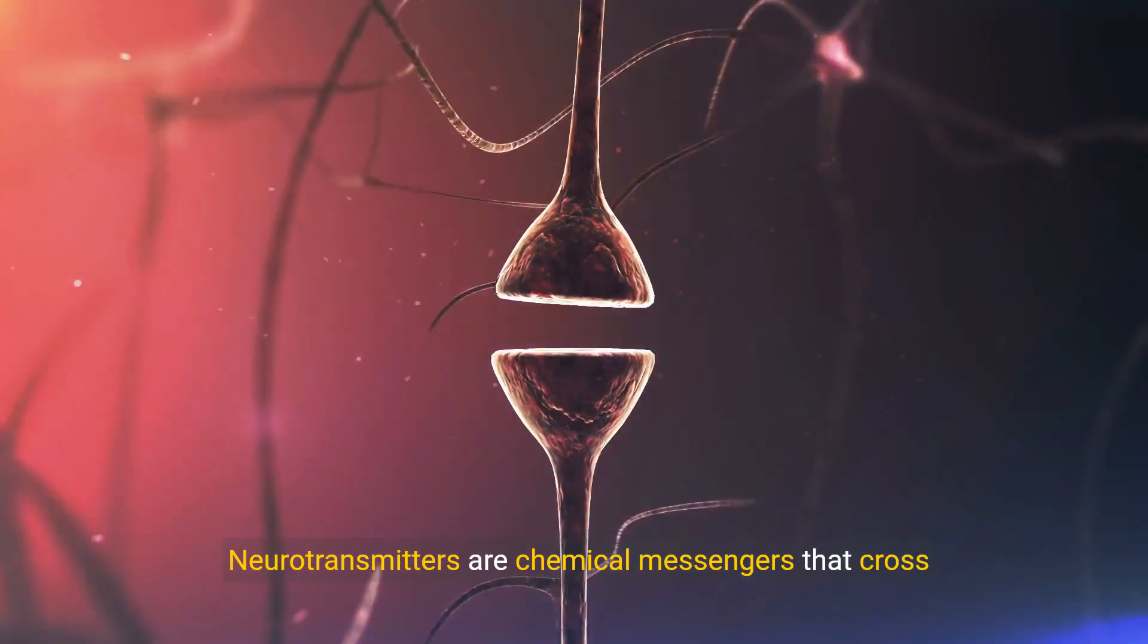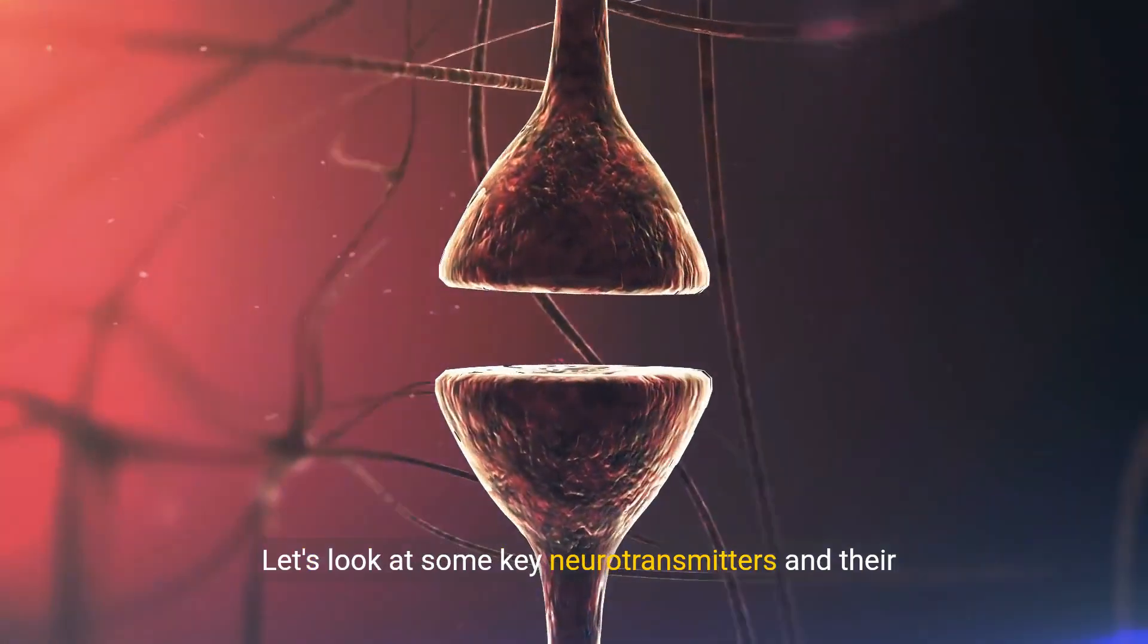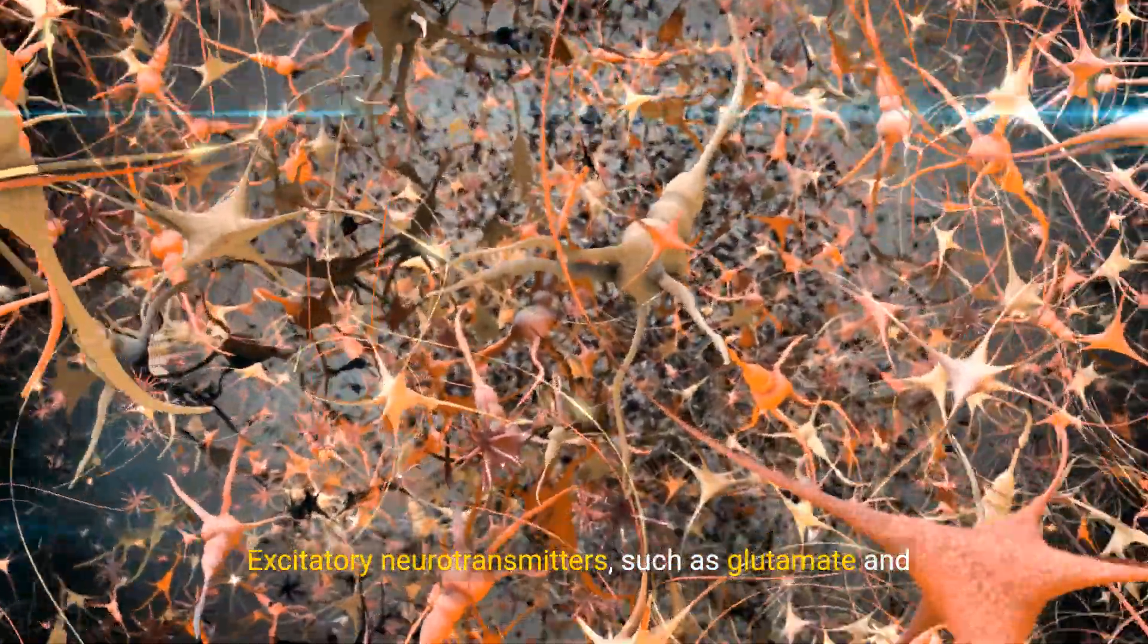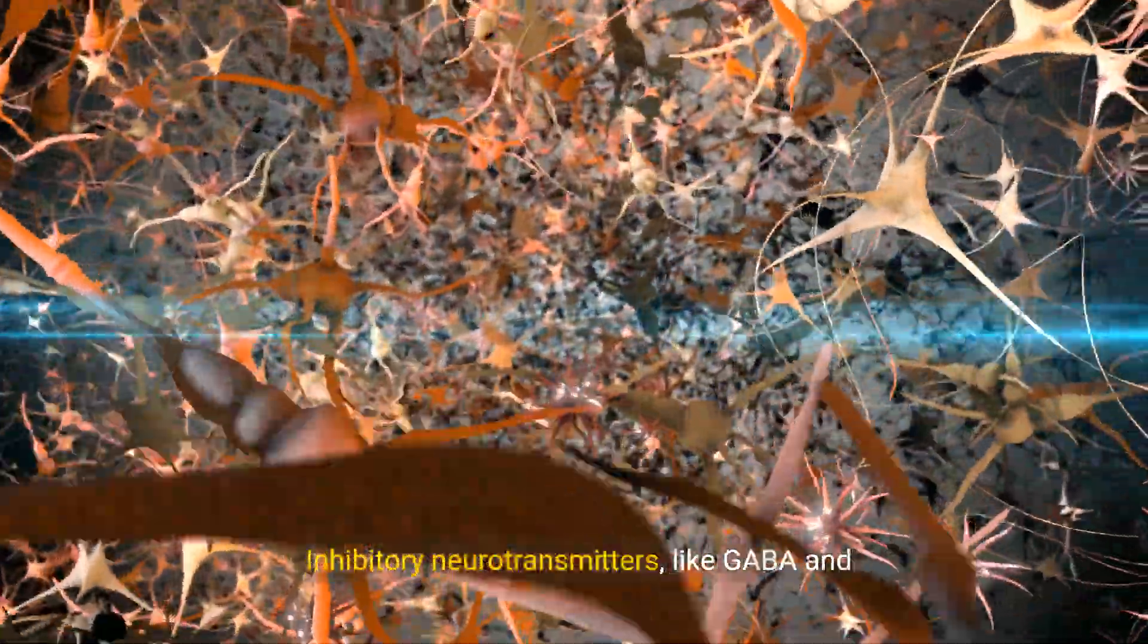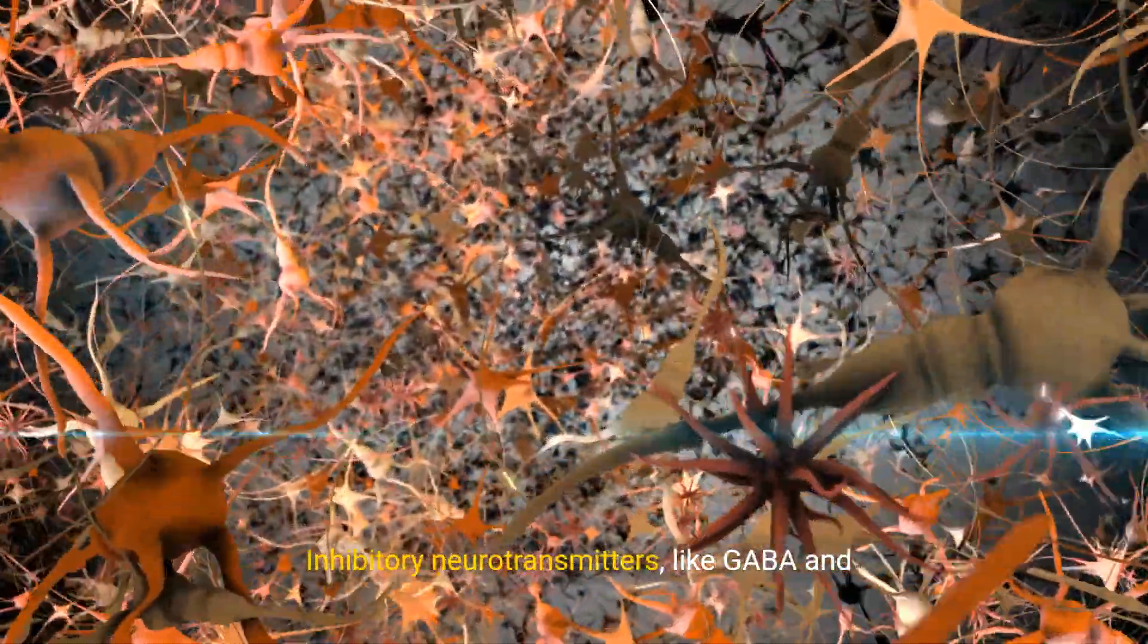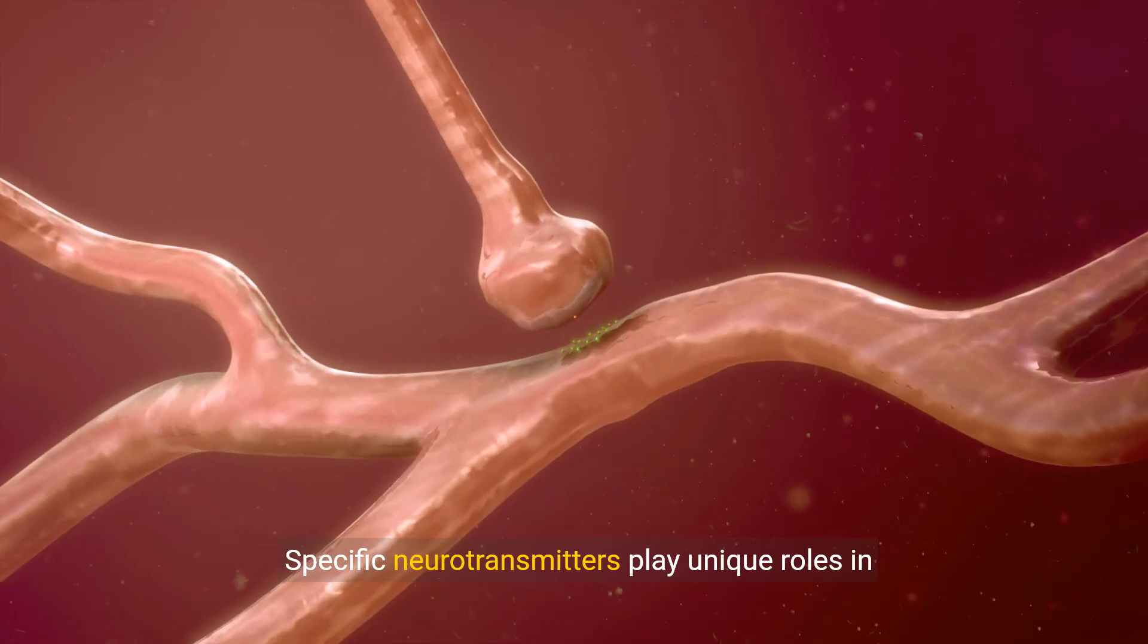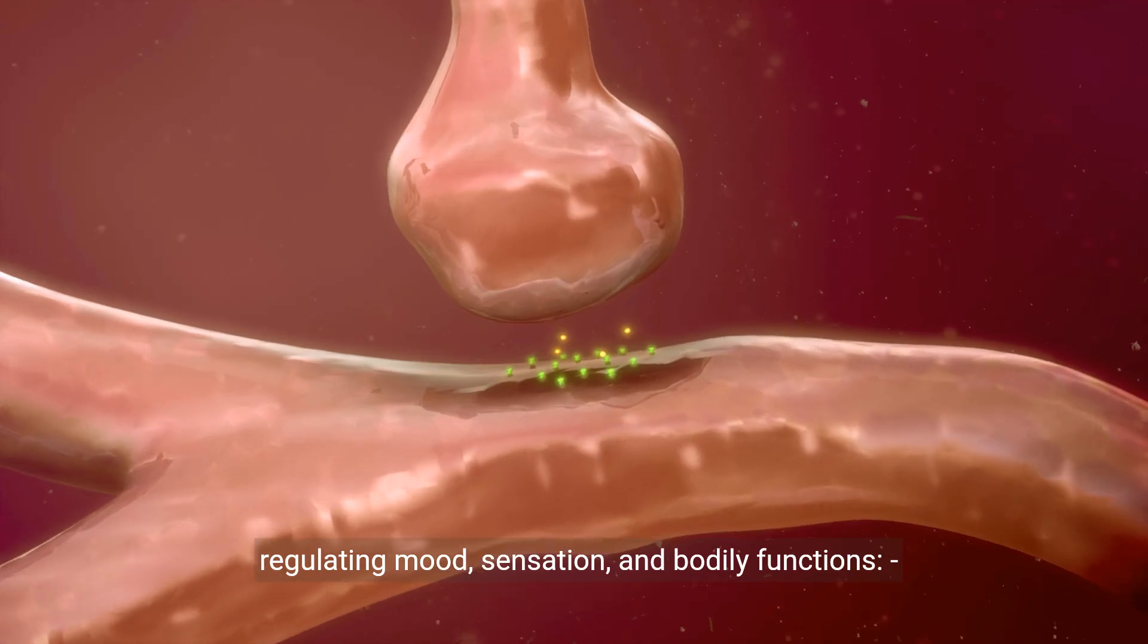Neurotransmitters are chemical messengers that cross the synapse to transmit signals to other neurons. Let's look at some key neurotransmitters and their functions. Excitatory neurotransmitters such as glutamate and dopamine promote the firing of neurons. Inhibitory neurotransmitters like GABA and serotonin prevent the firing of neurons. Specific neurotransmitters play unique roles in regulating mood, sensation, and bodily functions.